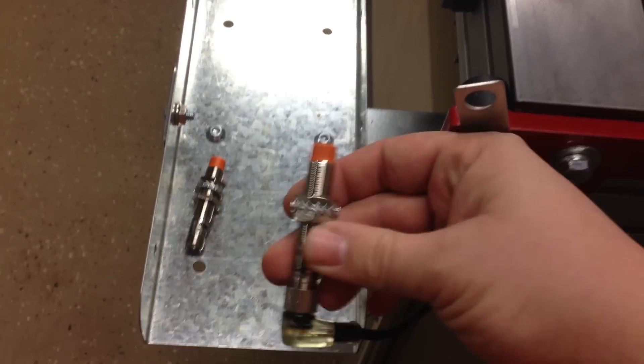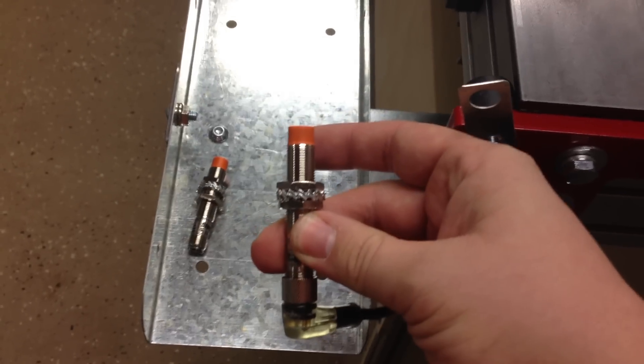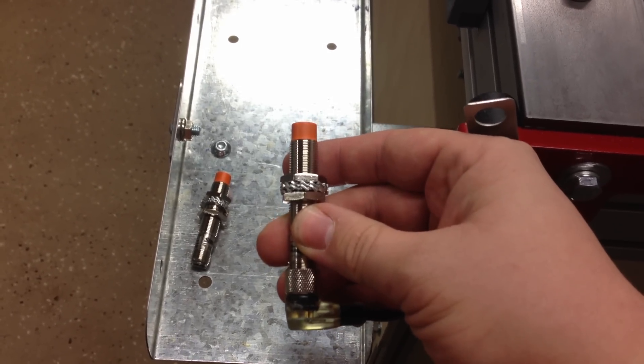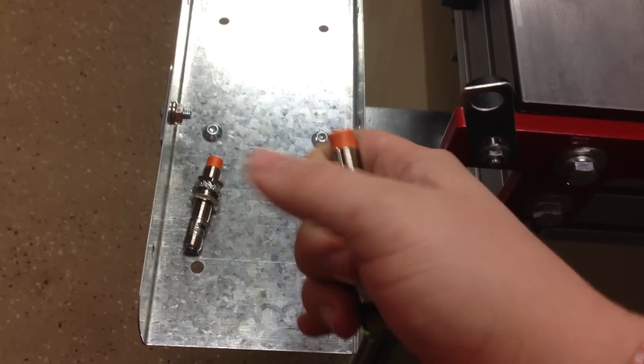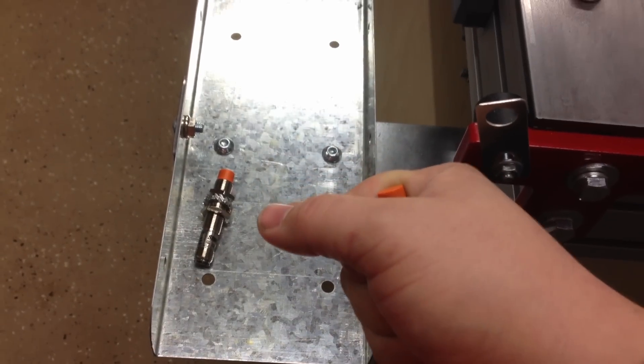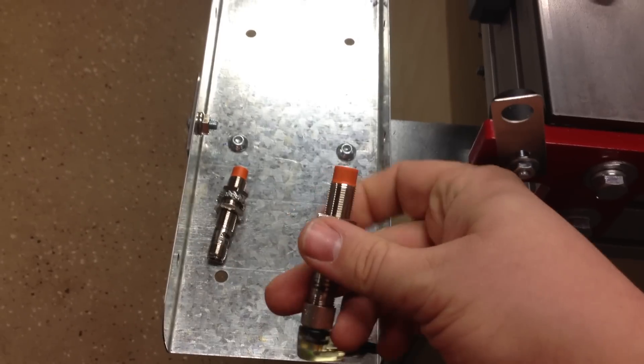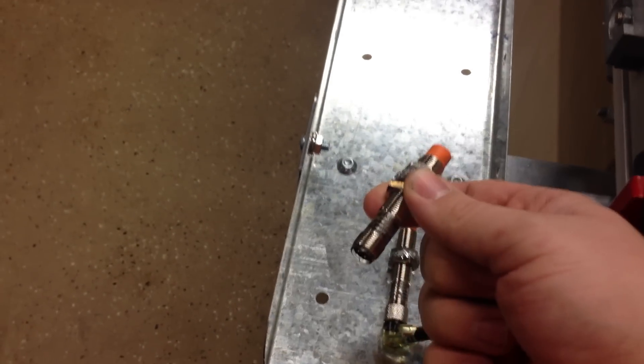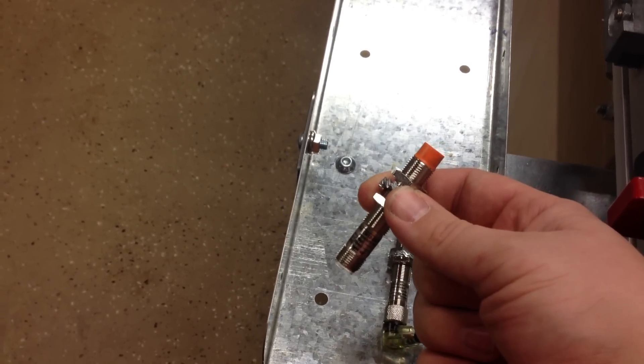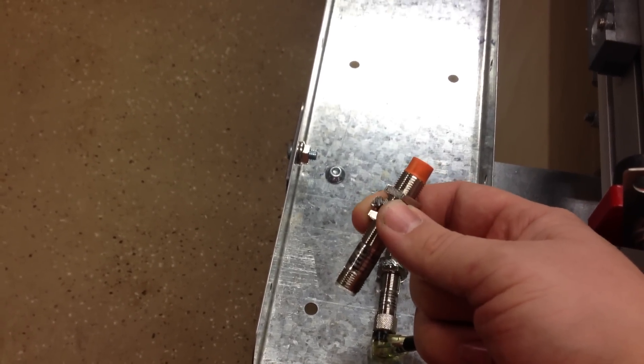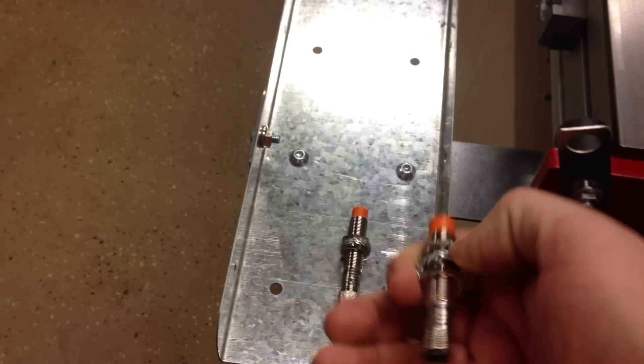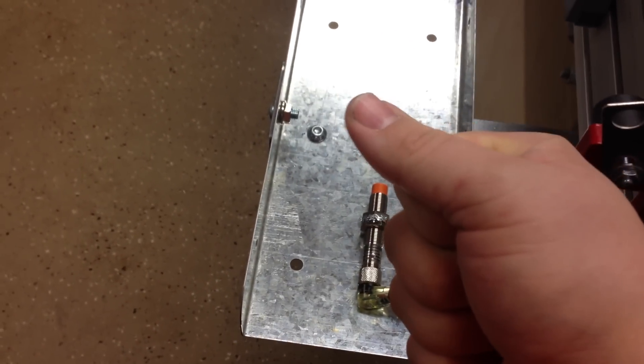So I don't know if that's a flaw in this particular sensor that maybe there's some sort of current lapse or a break in the current that happens when it gets cold and shrinks or something like that. So the sensor that came bad from CNC router parts, the first one that went bad, I was not able to make work by heating it up in my hand like that.